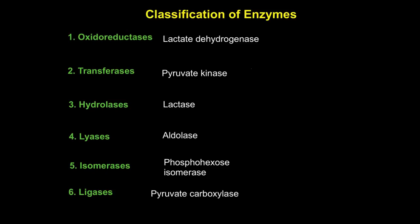Hundreds and hundreds of metabolic enzymes in our body can be classified systematically into six categories: oxidoreductases, transferases, hydrolases, lyases, isomerases, and ligases. These are the six classes of enzymes that encompass the hundreds of enzymes found in our metabolic pathways.